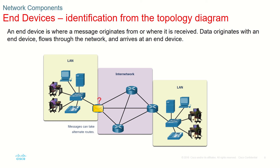Over here you can see another kind of device called a switch. A switch is an intermediary device or network device used to connect LANs — usually local area networks. You can see one switch connected to all the end devices here. Please remember: a switch is an intermediary or networking device.